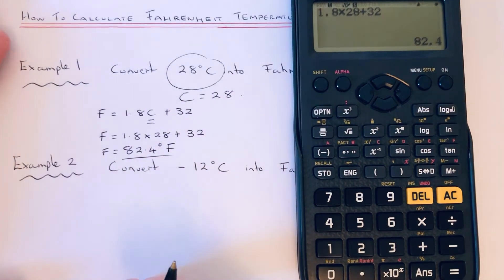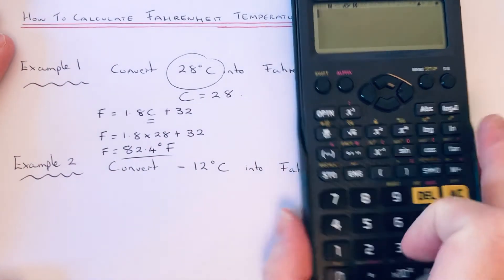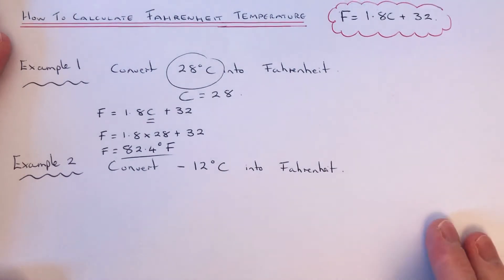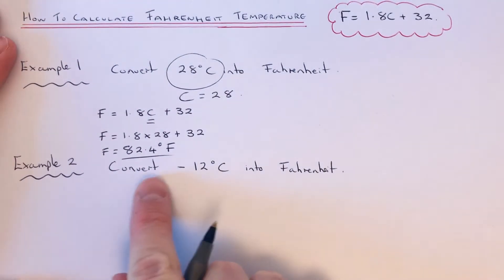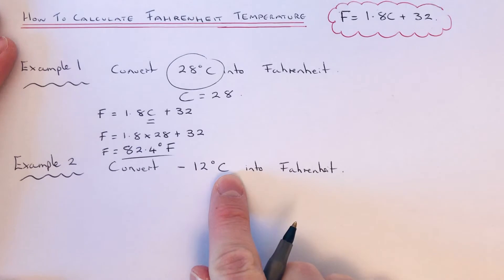Let's have a look at the second example. This time we've got to look at minus 12 degrees Celsius into Fahrenheit. This time the temperature is a negative temperature, but it's not going to make any difference to how you'd work out the temperature in Fahrenheit.